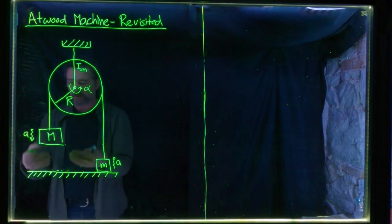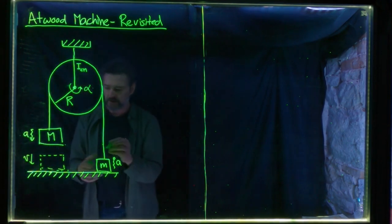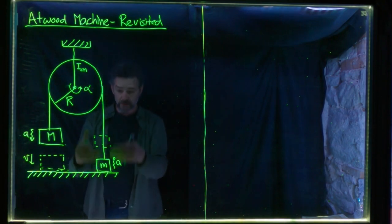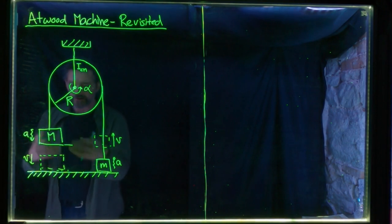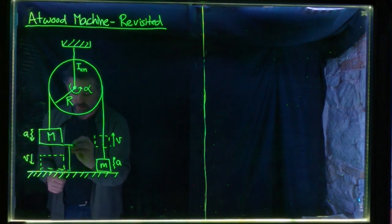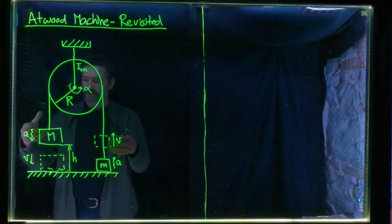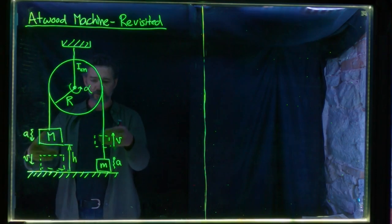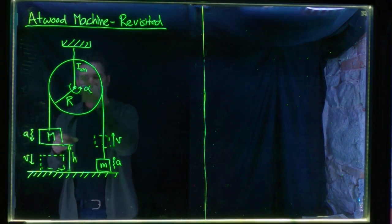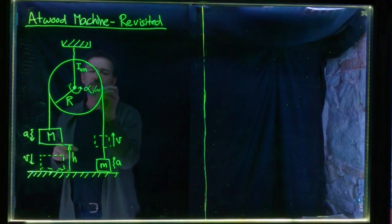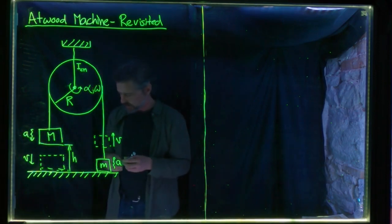As M is falling, it picks up speed, and just before it hits the ground it will have some velocity V downwards. At exactly the same time, little m will have risen and will have the same speed but upwards. Let's say the height through which M falls is H. Big M and little m undergo constant acceleration, their velocity increases linearly with time to some final velocity V. The pulley picks up angular velocity linearly until it reaches some final angular velocity omega. The question is: what is V and what is omega just before big M hits the ground?